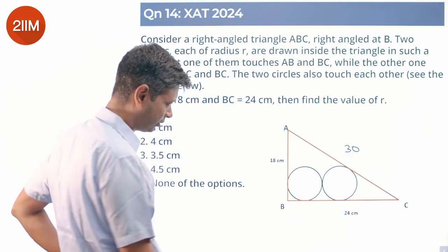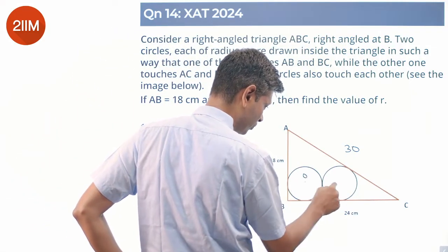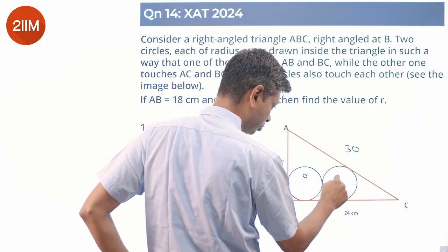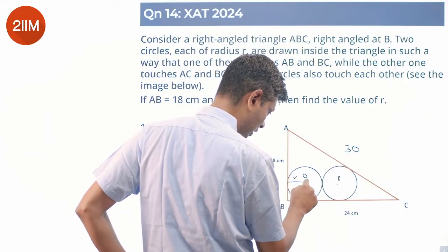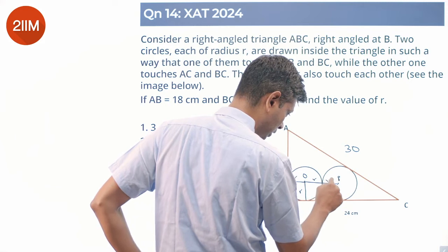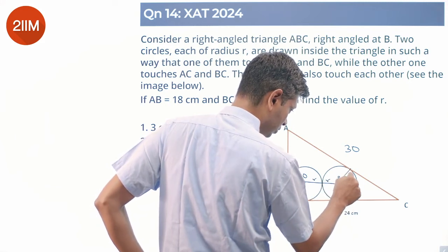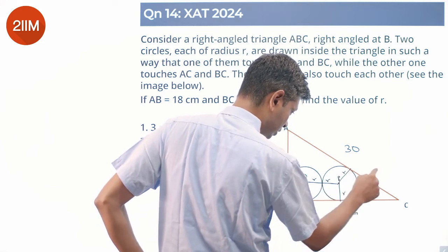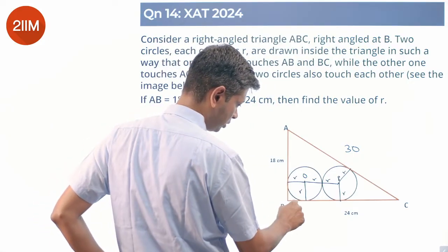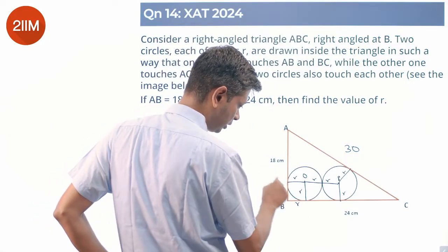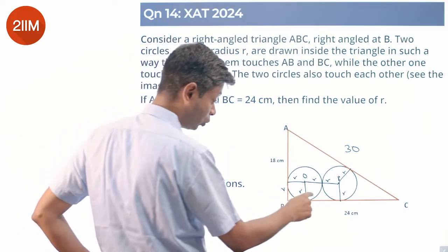I am going to take the centers O and P. Each circle has radius R. The distance between the two centers, since both circles have radius R and they touch each other, is 2R.